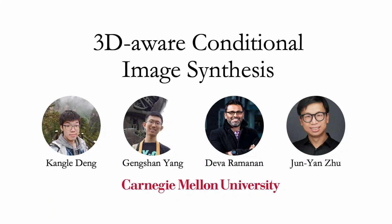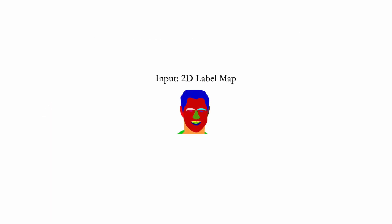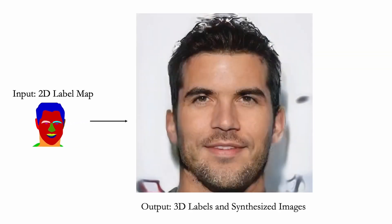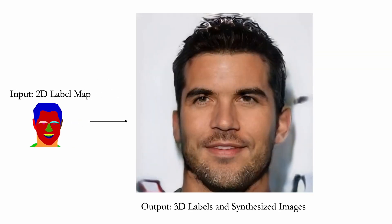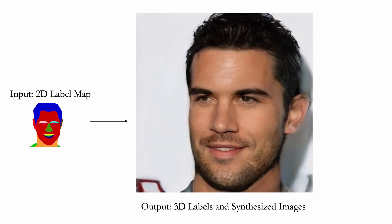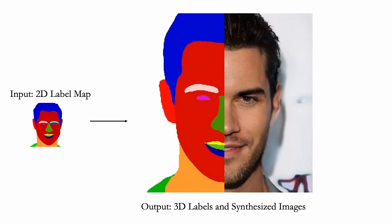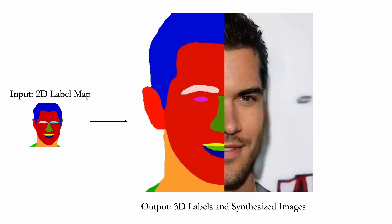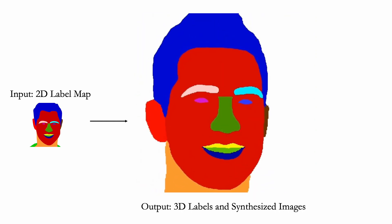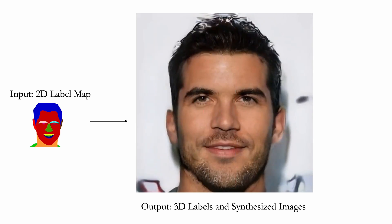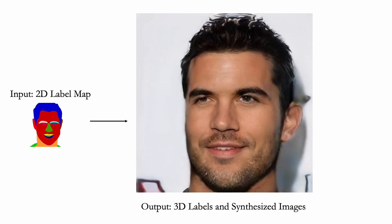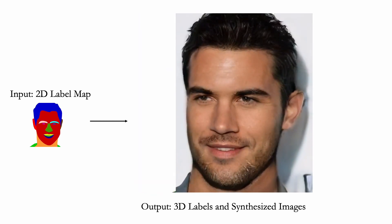We present a new method for conditional 3D-aware image synthesis. Given a 2D label map as input, such as a segmentation map, our model predicts a 3D representation of geometry, labels, and appearance, which allows users to control the generation of view-consistent and photorealistic images.